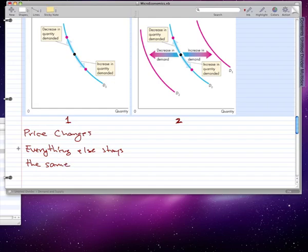And these are the two points that I want you to remember. So when the price changes but every other factor stays the same, then there will be a movement along the demand curve for the good under inspection.